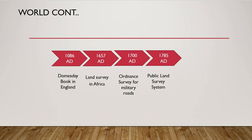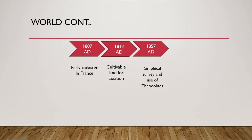In 1657 AD, a land survey was conducted in the Cape in Africa with a river as one of the boundaries. The ordnance survey was done in 1700 AD for military roads. In 1785 AD, the public land survey system was established. Although mapping started in Babylonia, early cadastre developed in 1807 AD in France under the order of Napoleon.